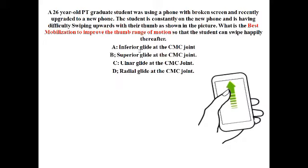What is the best mobilization to improve the thumb range of motion so that the student can swipe happily? Option A: inferior glide at CMC joint; Option B: superior glide at CMC joint; Option C: ulnar glide at CMC joint; Option D: the radial glide at the CMC joint.